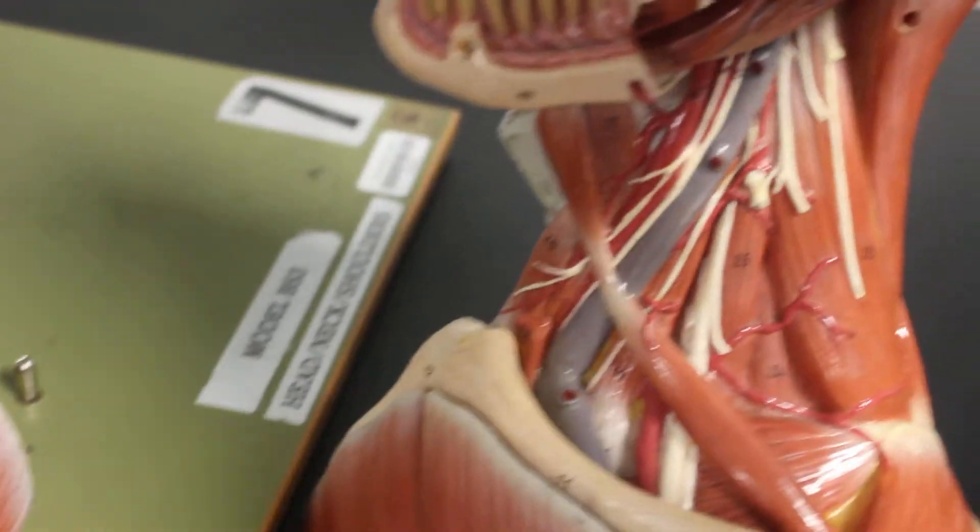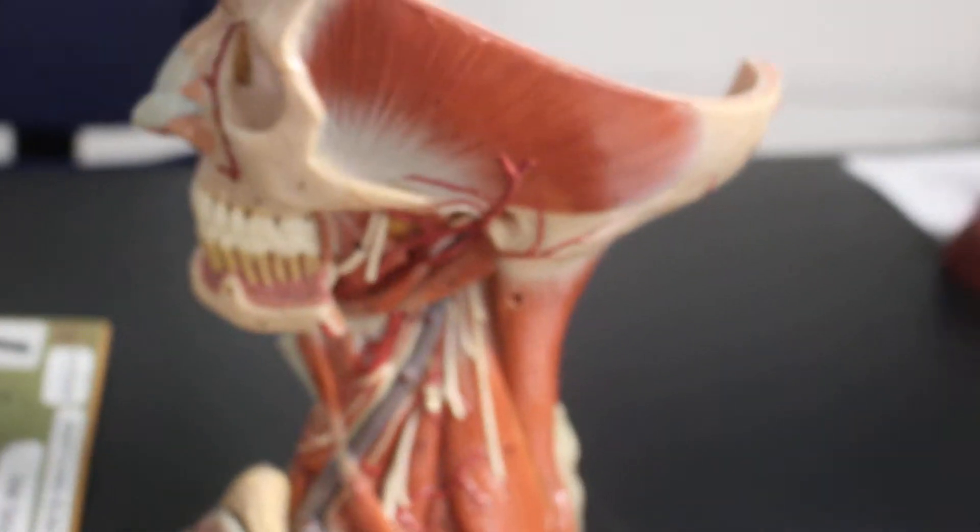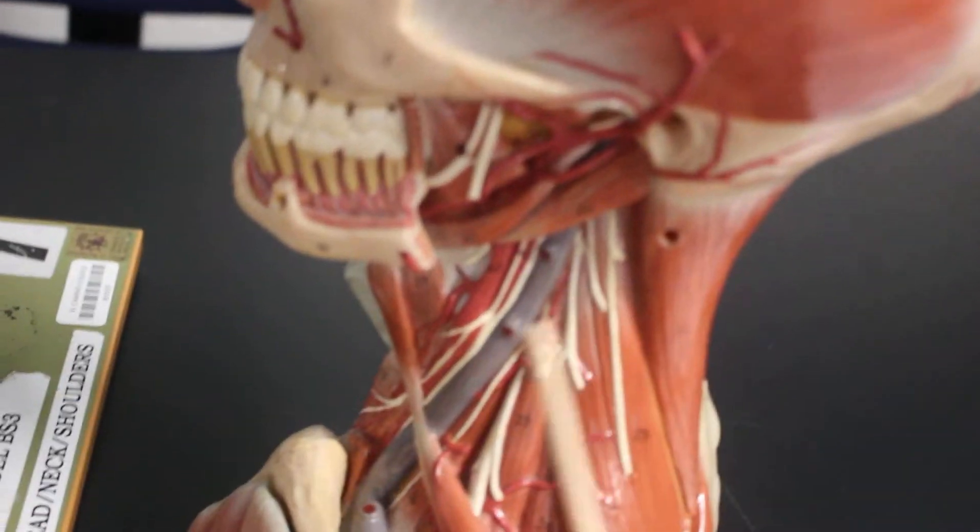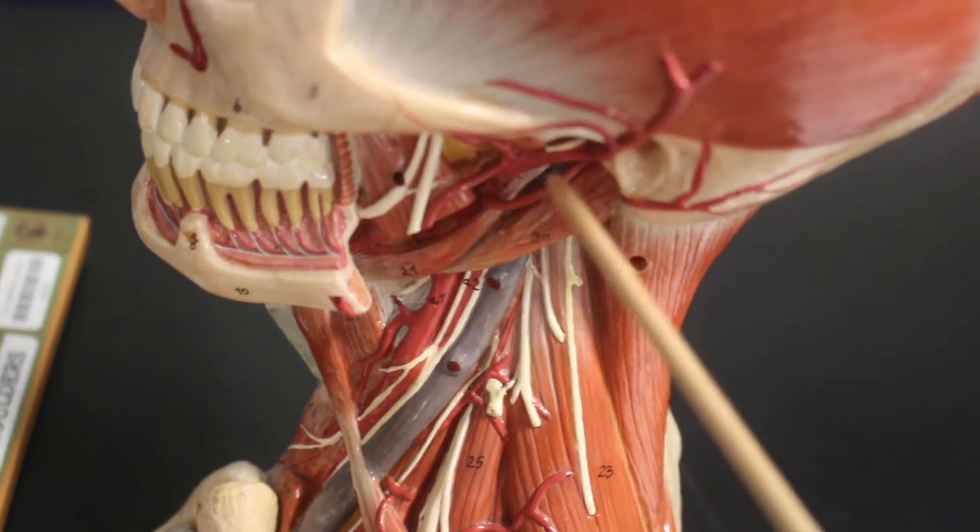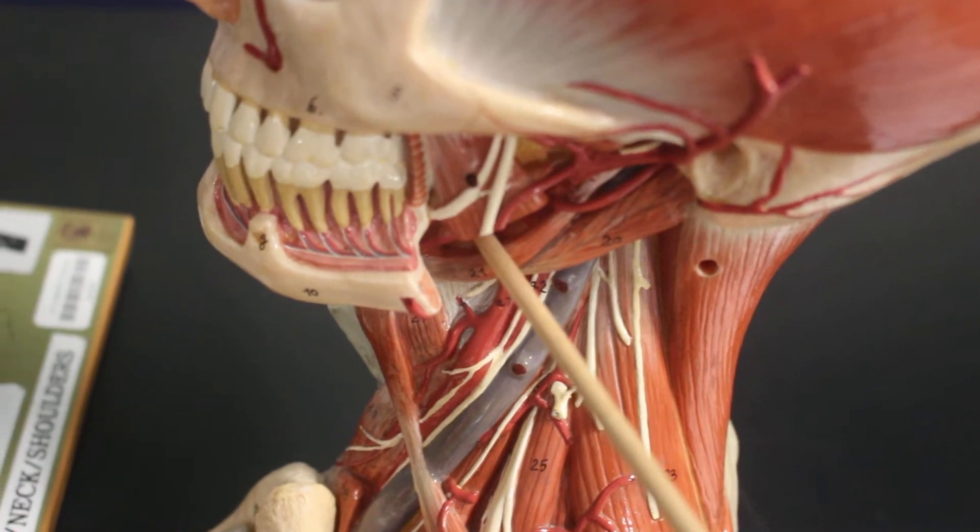From here we go to the deep muscles on the side of the neck. So here is the neck. This muscle right here is stylohyoid going from the styloid process to the hyoid bone.